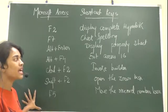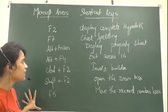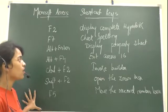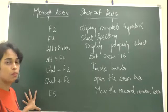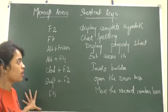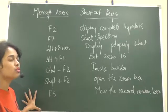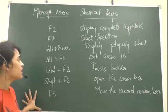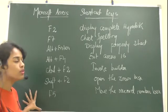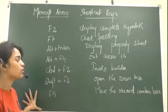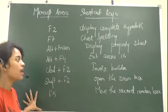Now if you want to exit Access, click on Alt plus F4. Now if you want to invoke the builders, click on Ctrl plus F2. It will invoke the builders.